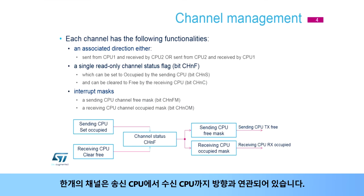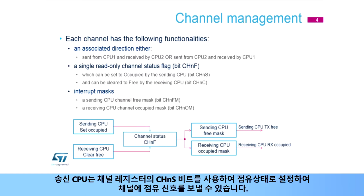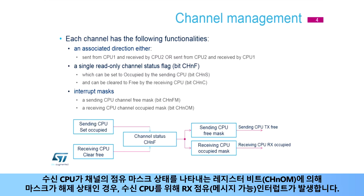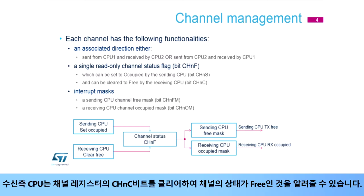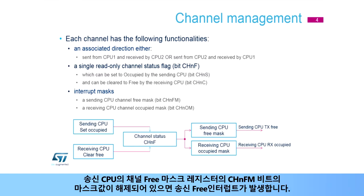A channel is associated with the direction from a sending CPU to a receiving CPU. The sending CPU can signal a channel to be occupied by setting the channel status to occupied using its Set Channel N Register Bit, or CHNS. If the receiving CPU has unmasked its channel-occupied interrupt in its Channel N Occupied Mask Register Bit, or CHNOM, an RX-occupied interrupt, or message available, is generated for the receiving CPU. The receiving CPU can signal a channel to be free by setting the channel status to Free using its Clear Channel N Register Bit, or CHNC. If the sending CPU has unmasked its channel-free interrupt in its Channel N Free Mask Register Bit, or CHN-FM, a TX-free interrupt, or flow-on, is generated for the sending CPU.